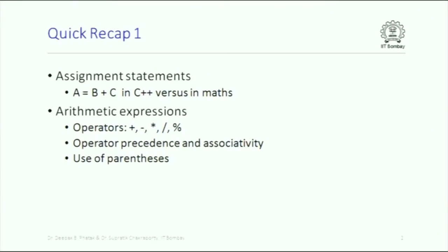The assignment statement requires C++ to undertake two tasks. One subtask is to evaluate the expression on the right-hand side, which is B + C in this case. It will take values of locations B and C, calculate that expression, and get one single result value. It is only then that C++ looks at the left-hand side of the equal-to symbol — till then it does not care what is there on the left. On the left-hand side it must find a single variable name to which a value can be assigned, and it assigns that calculated value to A.